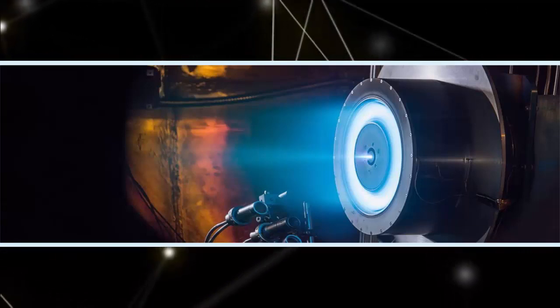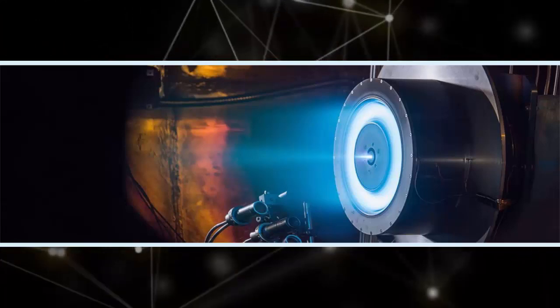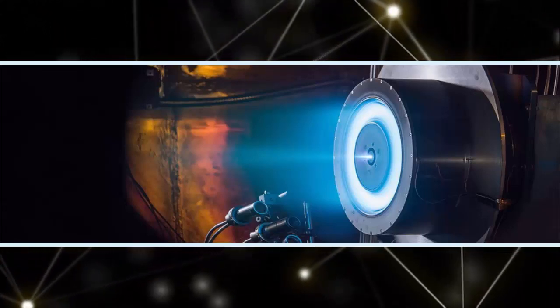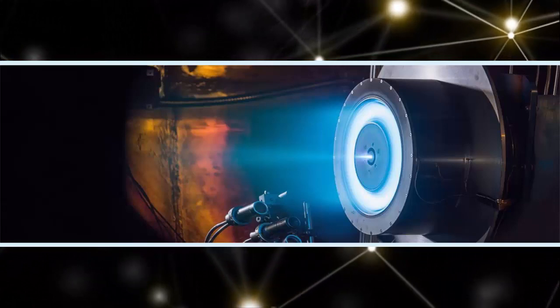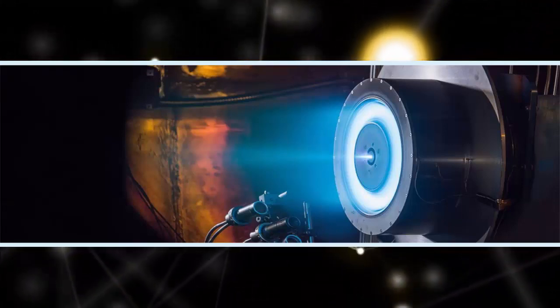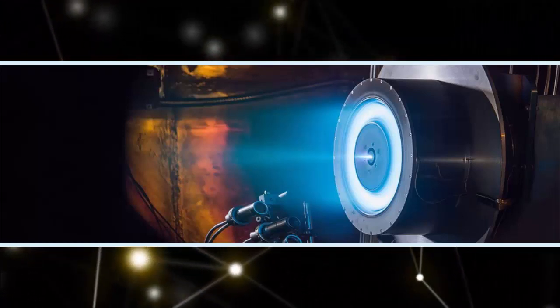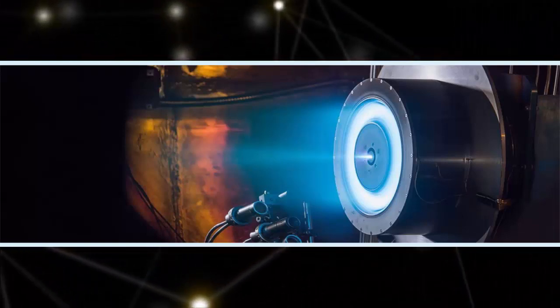Recent tests demonstrated that the X-3 thruster can operate at over 100 kilowatts of power, generating 5.4 Newtons of thrust, the highest of any ionic plasma thruster to date. It also broke records for maximum power output and operating current. The technology is apparently on track to take humans to Mars sometime in the next 20 years.